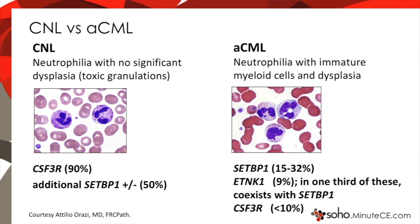By comparison, CNL is a similar disease with elevated white count, but unlike atypical CML, it is not an MDS-MPN overlap syndrome. Patients typically lack dysgranulopoiesis, and the cells in the periphery — the neutrophils — tend to have toxic granulation without dysplasia. In addition, patients with CNL are known to have CSF3R mutations in most cases, which is extraordinarily rare in patients with aCML.